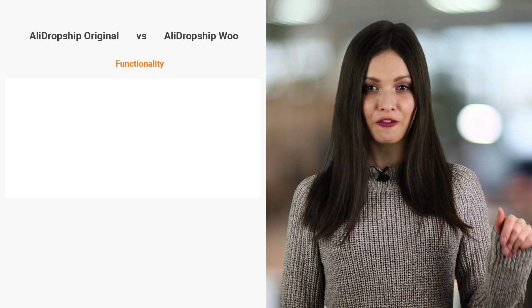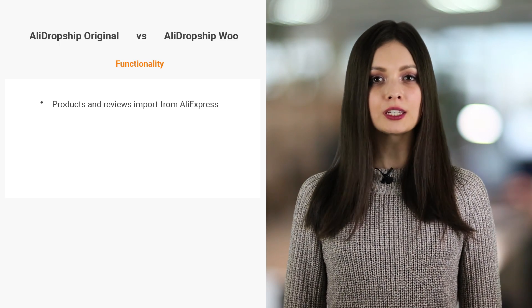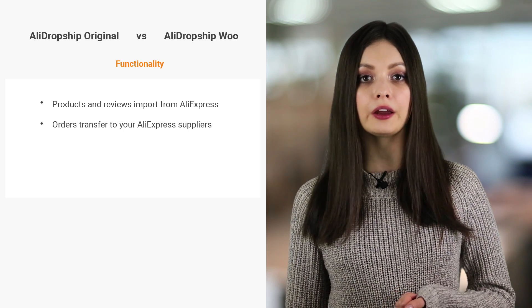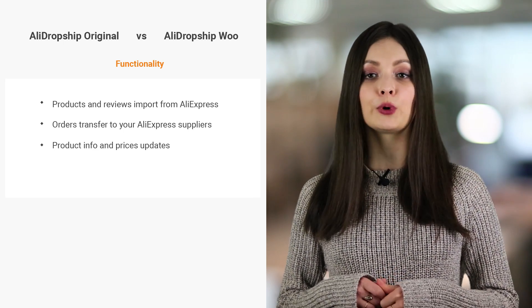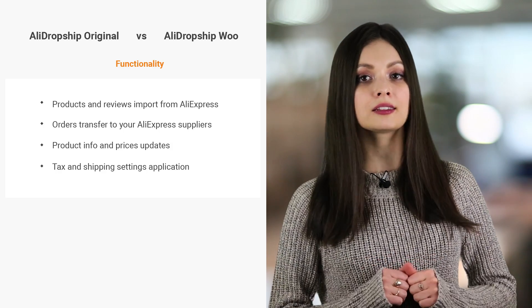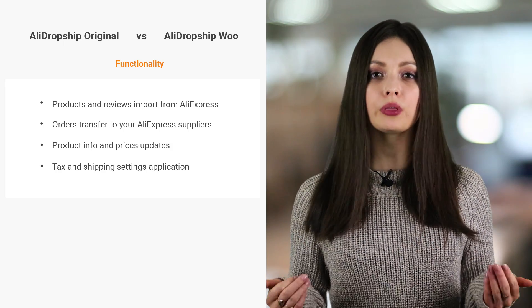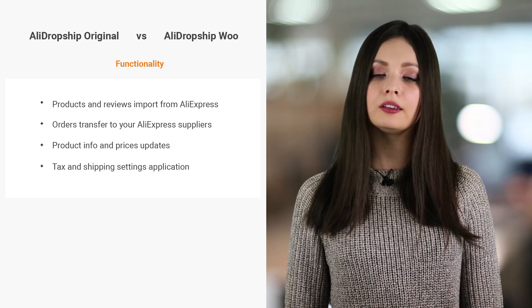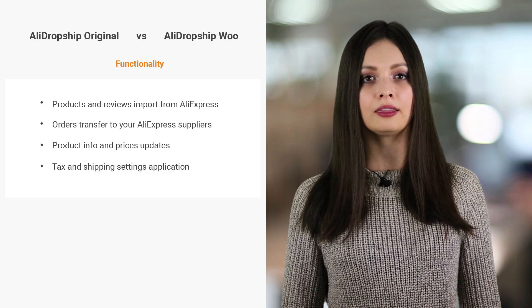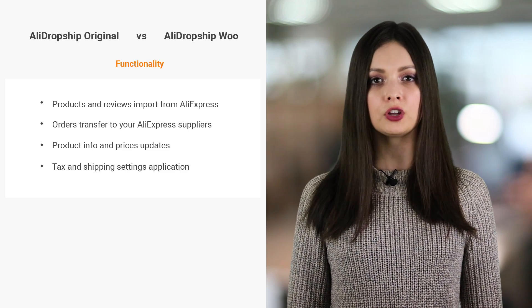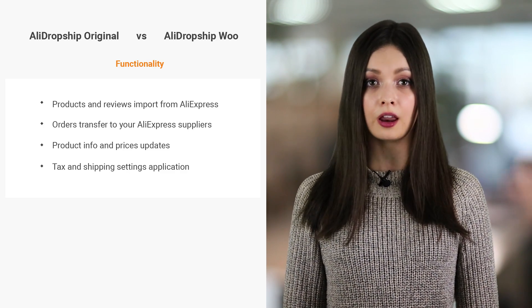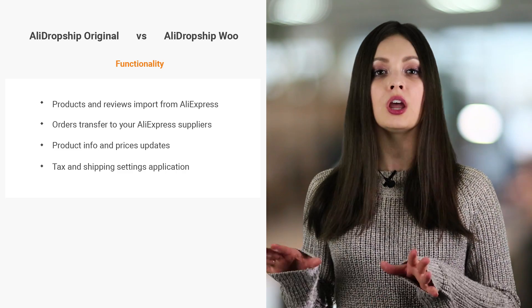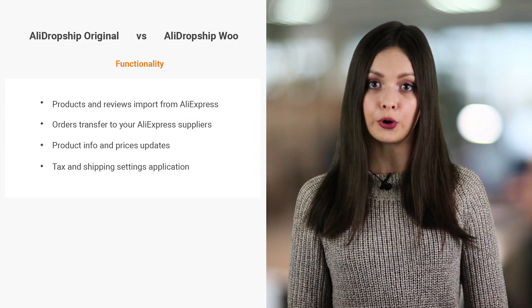Difference number 2: Functionality. Both versions can import products and reviews from AliExpress, transfer orders to your AliExpress suppliers, update product info and prices, and apply the desired tax and shipping settings. Both will simplify your dropshipping routine and automate the most important business processes. The difference is in the way you get these features. Some of the built-in features of AliDropship Original are implemented in WooCommerce as separate extensions and add-ons you will need to find and install separately.